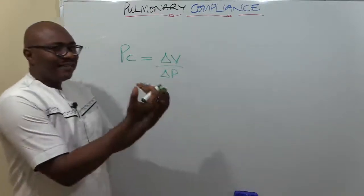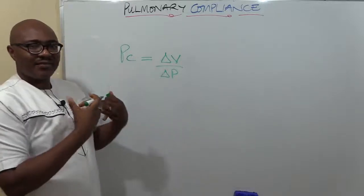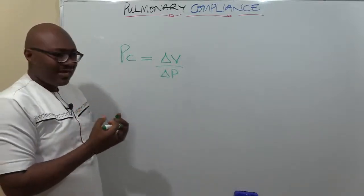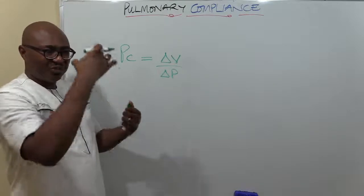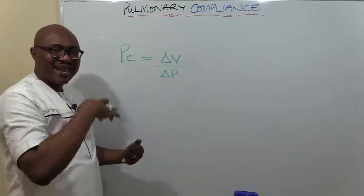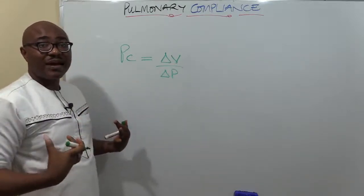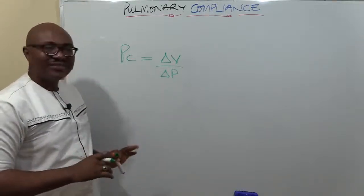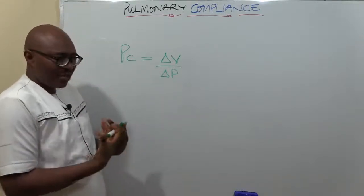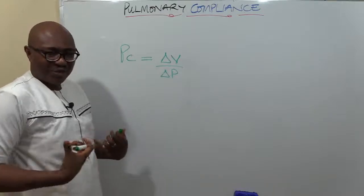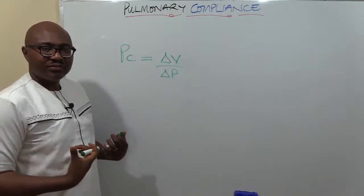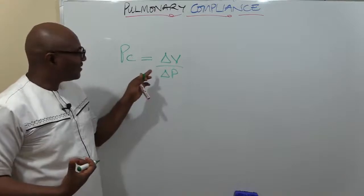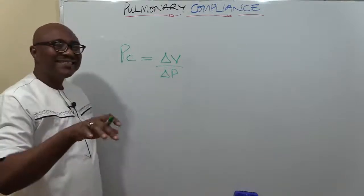So it is delta V over delta P. When air is coming in, you are stretching the lung with pressure. You are bringing in air - how much will it expand? How easily will it expand? That's what it's talking about - how much a lung can expand when pressure or force is applied to it.